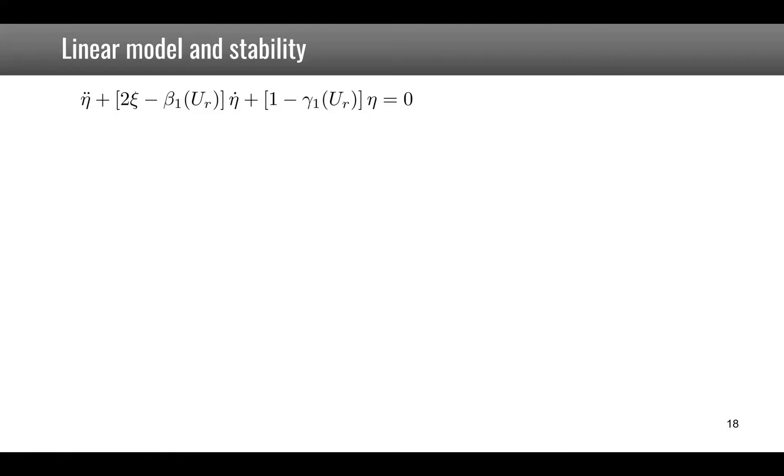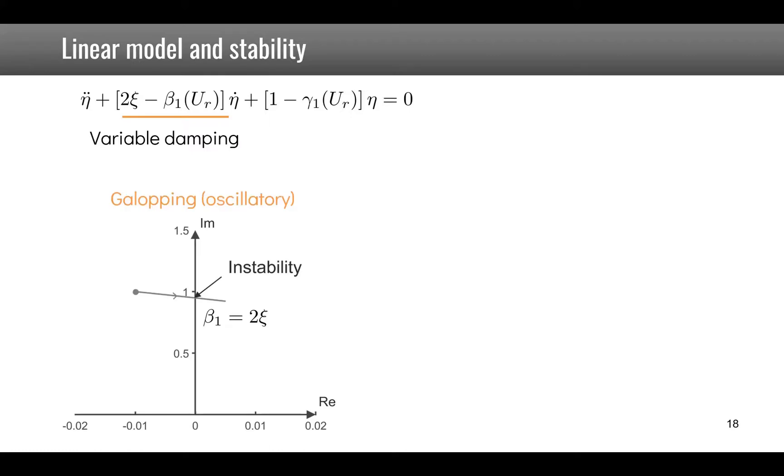We can also have a graphical interpretation of these instabilities so when the damping goes to zero due to the speed of the flow we have galloping. What we see here is that initially the pole is in the left plane so it is stable and as the velocity of the flow increases you see that the pole follows this line.